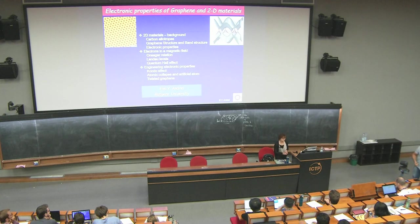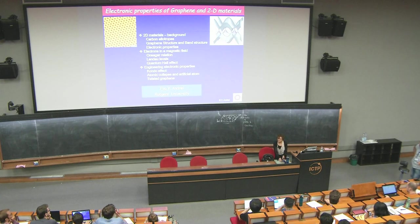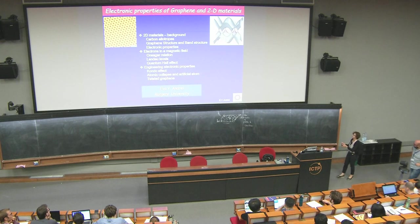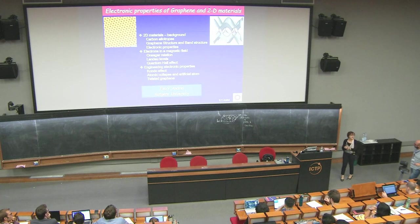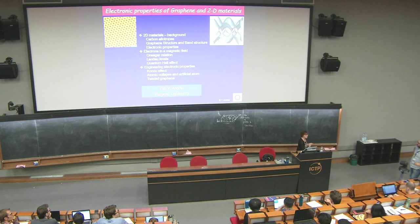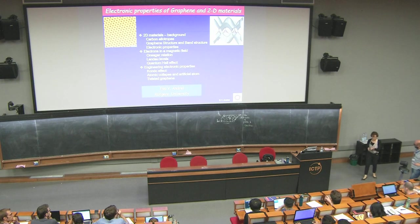Today I'm going to talk about the history of two-dimensional materials and the electronic properties and band structure of graphene. In the first lecture we'll cover electronic properties, band structure, and density of states. In the second part we'll apply a magnetic field and look at Landau levels, the formation of Landau levels, and quantum Hall effect — integer and fractional — and how it differs in graphene versus other two-dimensional materials.